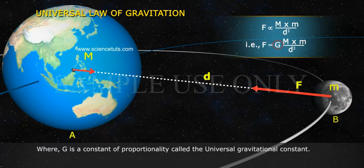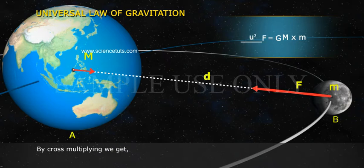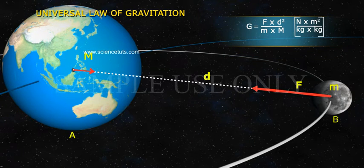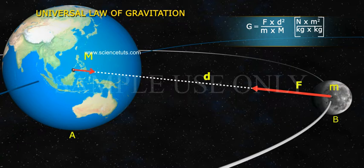Where G is a constant of proportionality called the Universal Gravitational Constant. By cross-multiplying we get G is equal to F into d square by M into m.